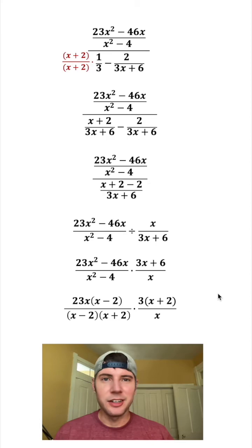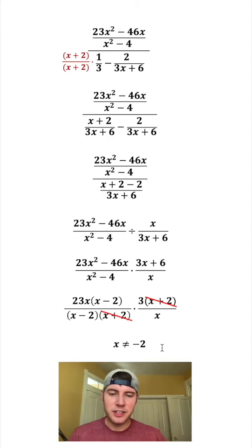So now a bunch of stuff is going to cancel out. x plus 2 and x plus 2 can cancel each other out, and then we have to state that x cannot equal negative 2. This x and this x can cancel out, and then we have to state that x can't equal zero. And then x minus 2 and x minus 2 cancel out, and we have to state that x can't equal 2.